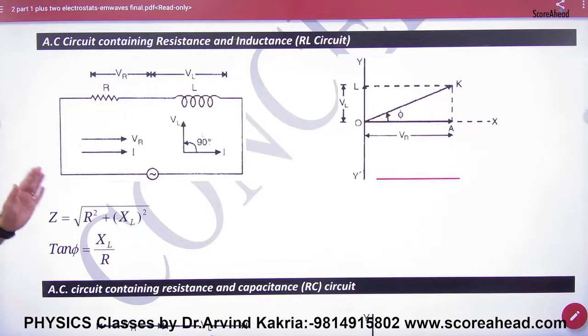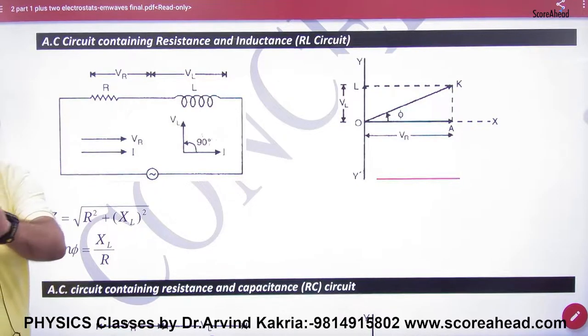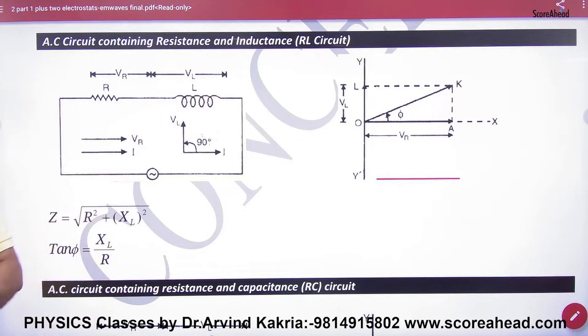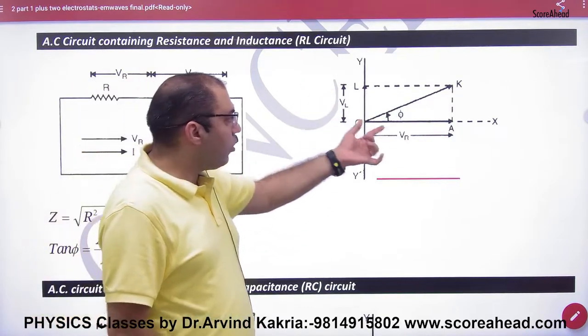AC Circuit containing Resistance and Inductance, meaning one R and one L. Don't confuse this with RCL or LCR. If you change C, then Vc will change. What will happen to Vl and Vr?